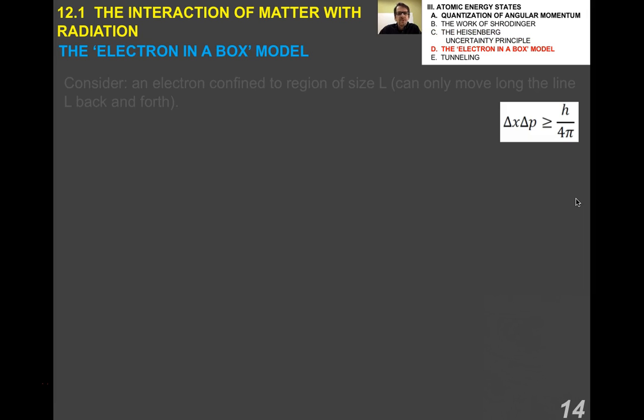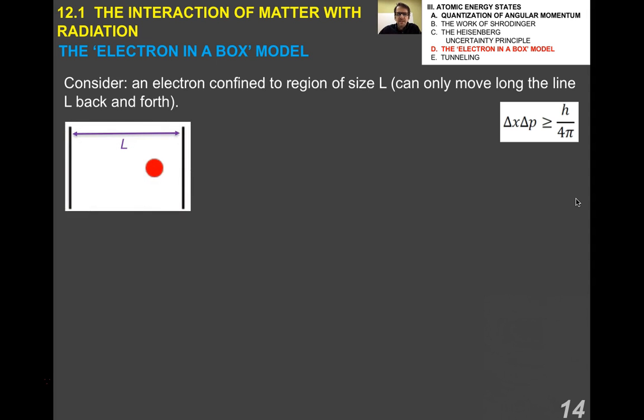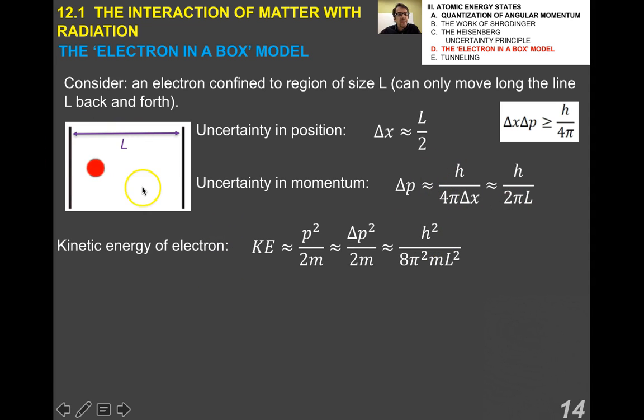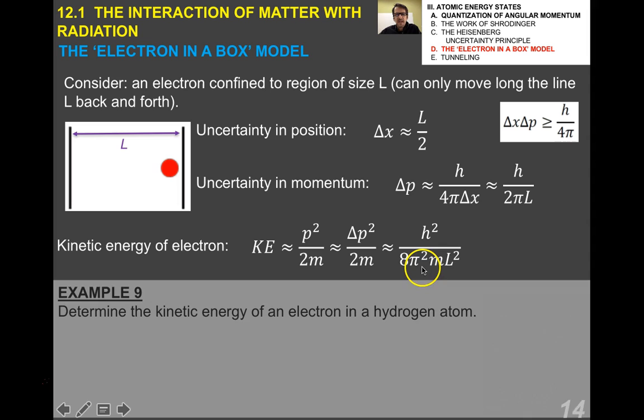I want to talk about the electron-in-a-box model. If you think about an electron that's confined to a region of size L, it can only move along a line L. The uncertainty in its position is going to be L over 2. The uncertainty in momentum using Heisenberg's uncertainty principle is going to be H over 2 pi L. Make sure you understand that, very simple algebra. The kinetic energy of this electron is going to be, as usual, P squared over 2 M. But that's really delta P squared over 2 M. Putting in my values, I get H squared over 8 pi squared M L squared.